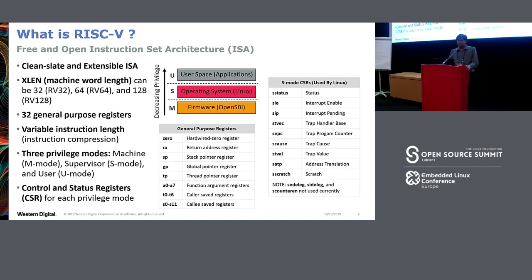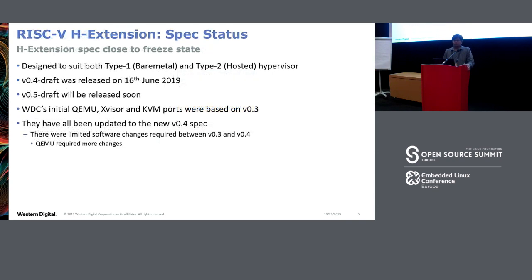Each mode has its own CSRs. To highlight, the box on the right shows that to run Linux we just need nine CSRs of S mode. RISC-V is an extensible ISA with many optional extensions, one of them being the hypervisor extension, or the H extension as we call it.